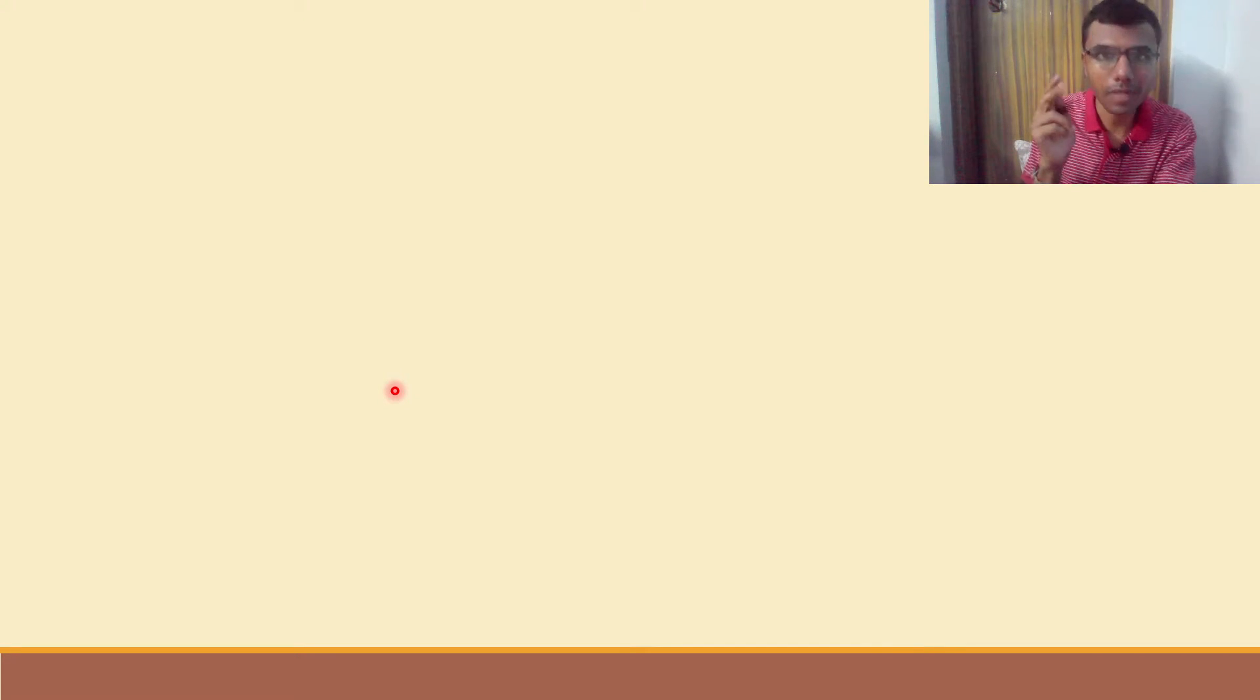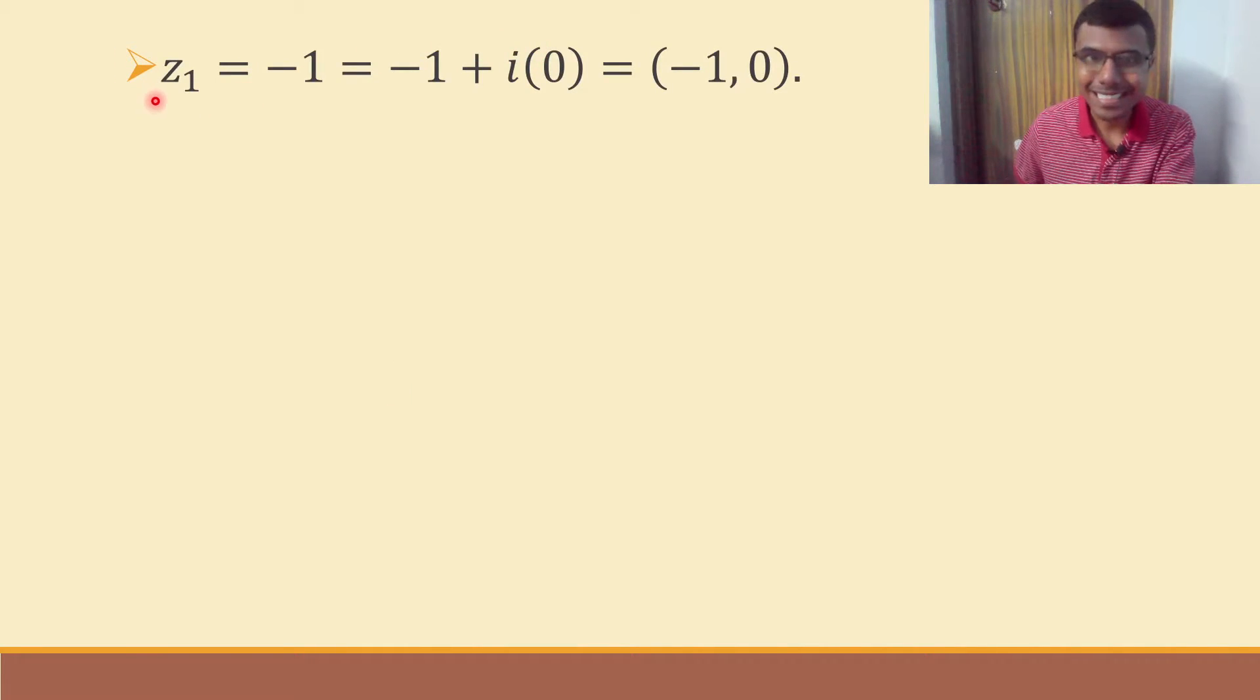Before we find out the argument of z1 into z2, first we need to find out the argument of z1, next we need to find out the argument of z2. See, z1 is minus 1. Minus 1 can be written as minus 1 plus i into 0. So now this complex number I can write it as minus 1 comma 0. Now you could ask me why I wrote it like this. It will be easy to find out the argument if it is in this form. So I got it as a point in the 2D plane.